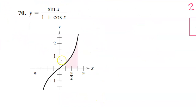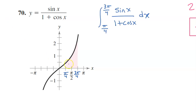Let's do one more. We need to find the area under this curve. If this is pi over 2, then this will be pi over 4, and this will be 3 pi over 4. To find the area we are looking for, we will ultimately need to evaluate this definite integral from pi over 4 to 3 pi over 4.